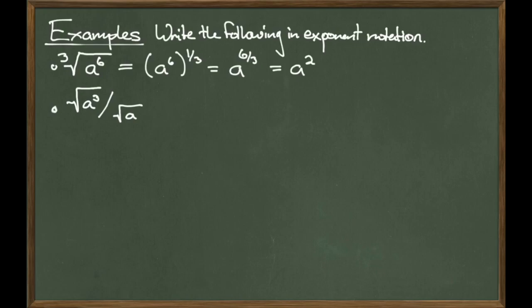Now consider the square root of a to the 3rd over the square root of a. Since we're taking the square root of both a to the 3rd and a, we can bring a to the 3rd and a inside the radical. a cubed divided by a is a squared, which we write underneath the radical, and then the square root of a squared turns out to be the absolute value of a.